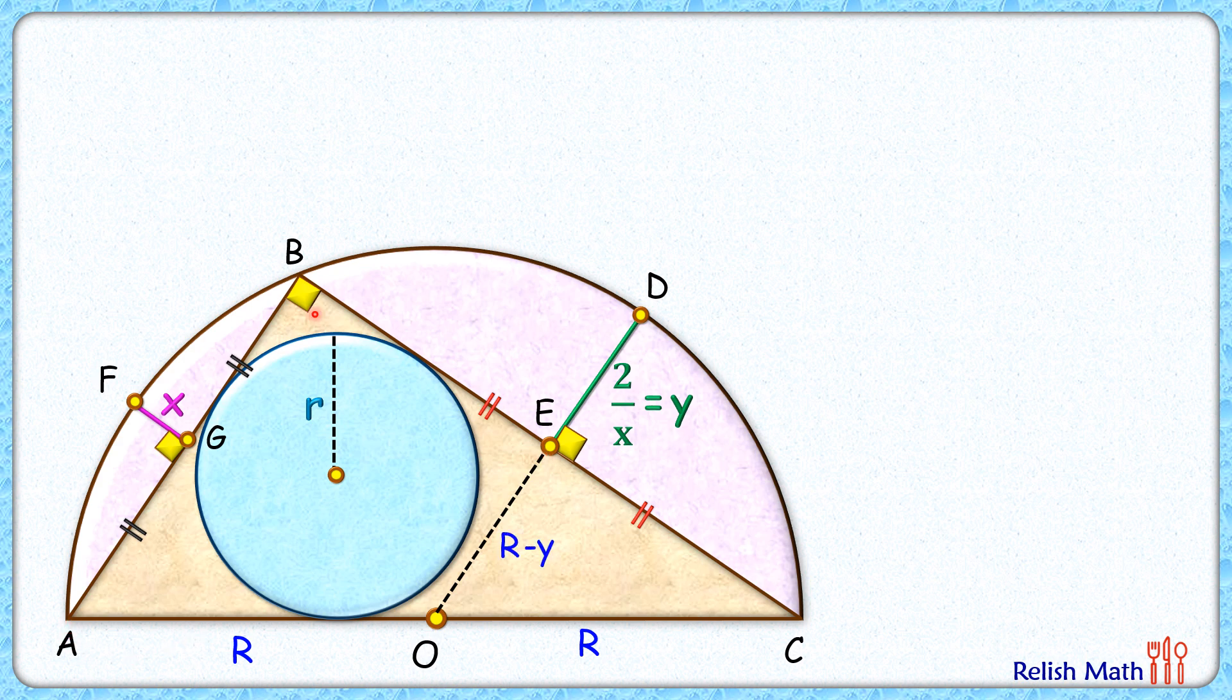Now in triangle ABC, E and O are the midpoints of the sides. So applying midpoint theorem we will get AB as twice of OE, or AB is 2 times R minus y.